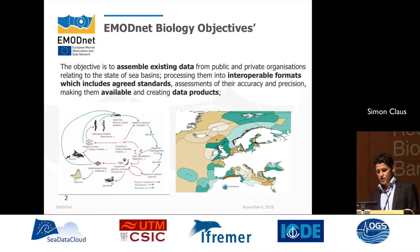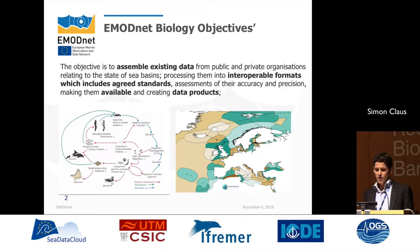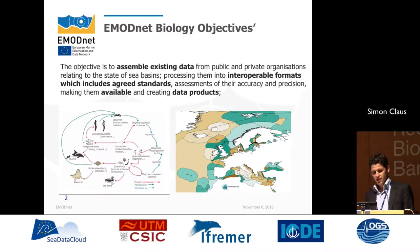The overall objectives of EMOTNET Biology are to make marine biodiversity data available in a standardized and interoperable way, and to create specific data products from it. We look at data from different regional seas in Europe and at biological data from different trophic groups: planktonic data, fish observations, benthic data, but also data on marine mammals, birds, reptiles, and other higher organisms.